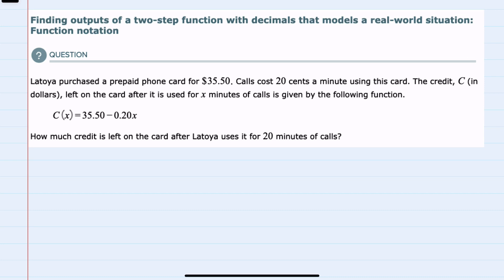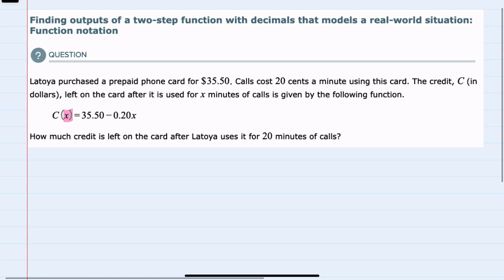left on the card after it's used for X minutes of calls is given by C(X) equals that initial value, $35.50,